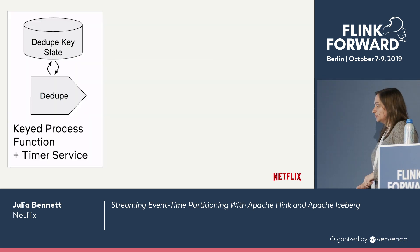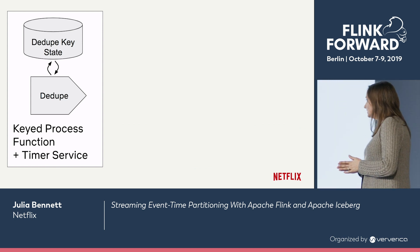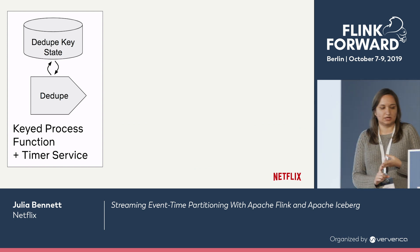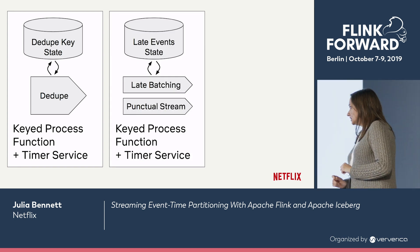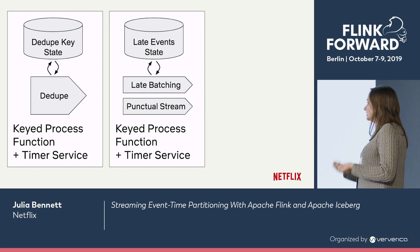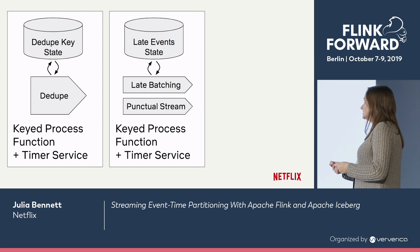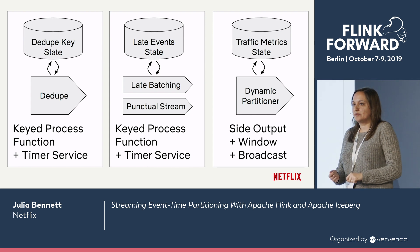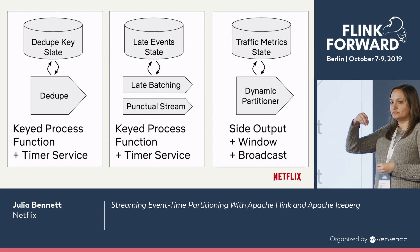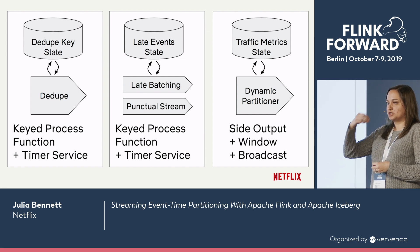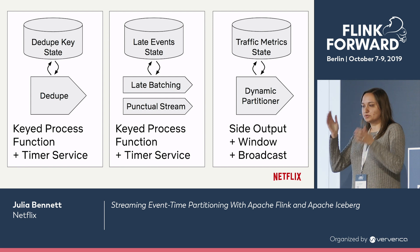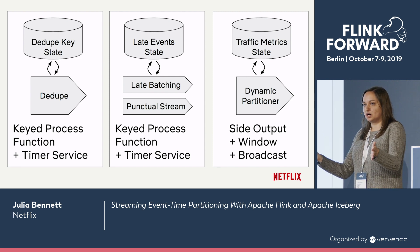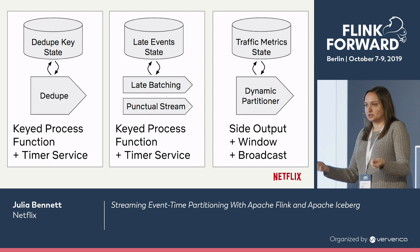Let's talk about how we implemented these under the hood. The dedupe is a keyed process function plus the timer service to evict keys at the appropriate cadence. The batching is also a keyed process function plus the timer service, using it to evict late events from state with custom logic. The dynamic partitioner works by pulling a side output from the stream as it goes by — this side output contains metrics about traffic volume from each individual operator. It pulls them together in one big window, computes metrics about global traffic volume across the application, and distributes them out to all operators to use in making parallelism decisions for any given partition.